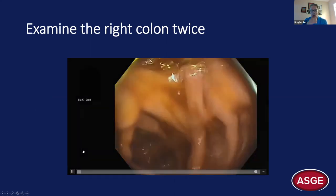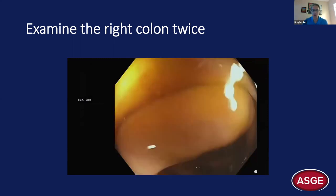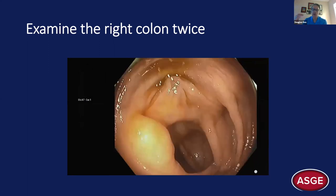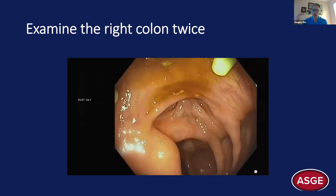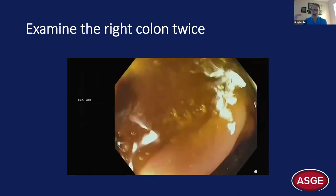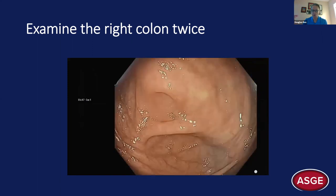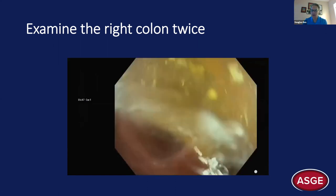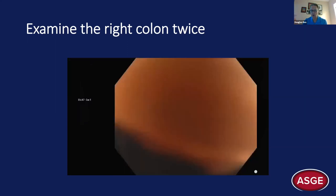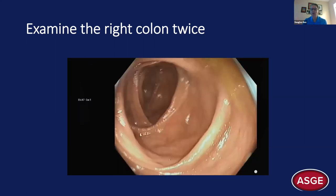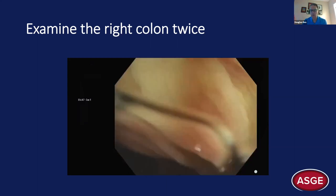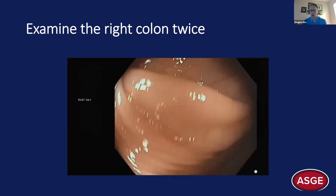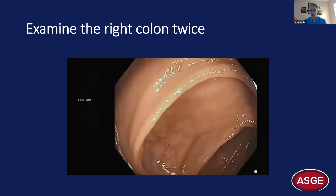The basics include looking behind all the folds, cleaning up, and descending adequately. We now recommend examining the right colon twice: start at the appendiceal orifice, come back to the hepatic flexure, then go back down to the cecum and repeat. This is recommended because colonoscopy is generally less effective at preventing right-sided cancer than left-sided cancer. Looking behind every set of haustral folds is time-consuming but essential.